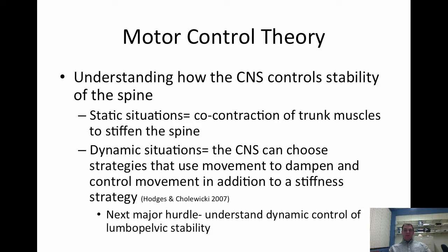Motor control theory is our understanding of how the central nervous system controls stability of the spine. There are two different types of situations: static and dynamic. In a static situation, sitting in a chair, co-contraction of trunk muscles stiffens the spine to keep it in proper alignment. In dynamic situations, the central nervous system can choose strategies that use movement to dampen and control movement in addition to a stiffness strategy. Hodges and Kolowicki — most of us have read their work across multiple DAT presentations.